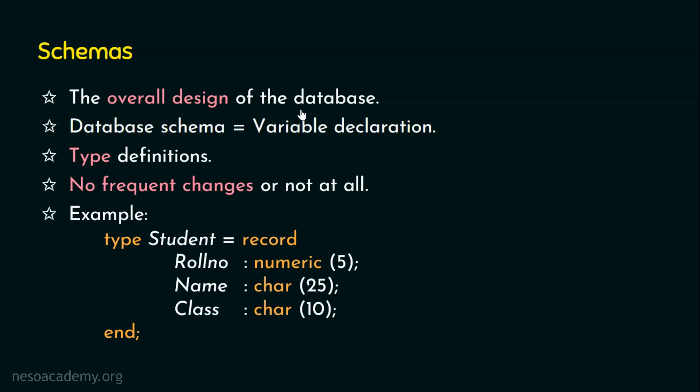Now let's correlate this with a real-world example — a university. The department record will contain columns like department name, building, budget, head of department, and other fields. Courses will contain fields like course ID, title, department name, and credits. The student table will contain fields like roll number or ID, name, department name, and total credits. At the physical level, these tables can be described as a block of consecutive storage locations. The system will hide these level of details from programmers — that's what we call data abstraction. It hides complexity, because programmers don't need all those internal details.